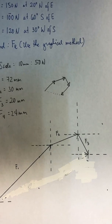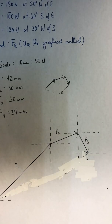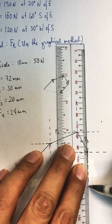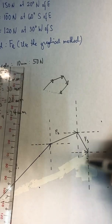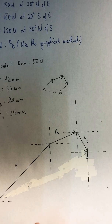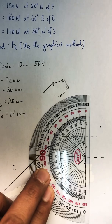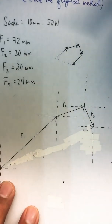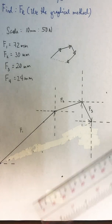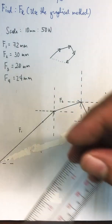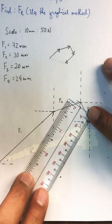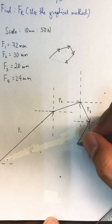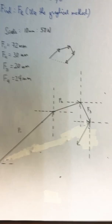We now move on to our last vector, F4. It is 24 millimeters at 30 degrees west of south. We draw an imaginary Cartesian plane again at the head of F3 — this will serve as our guide. West of south happens to be in this quadrant with respect to this imaginary Cartesian plane. The fourth vector measures 24 millimeters.